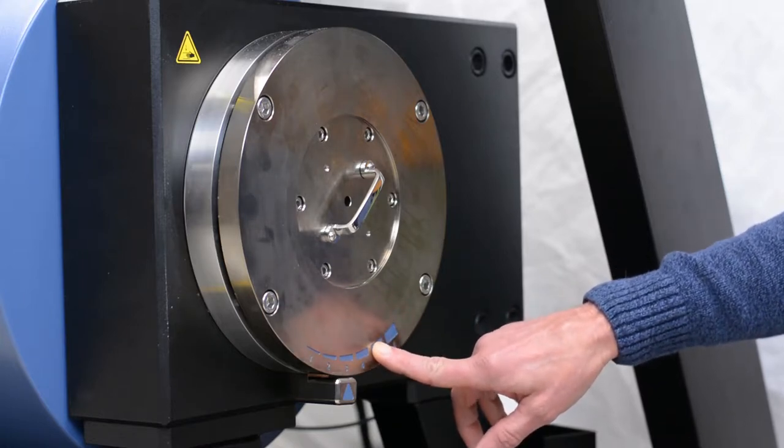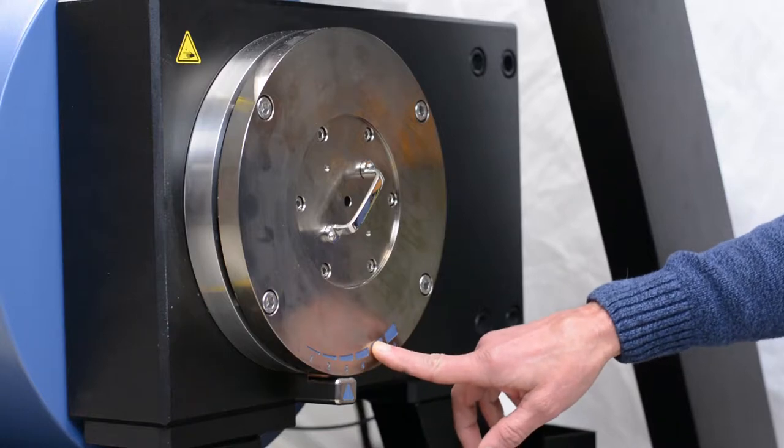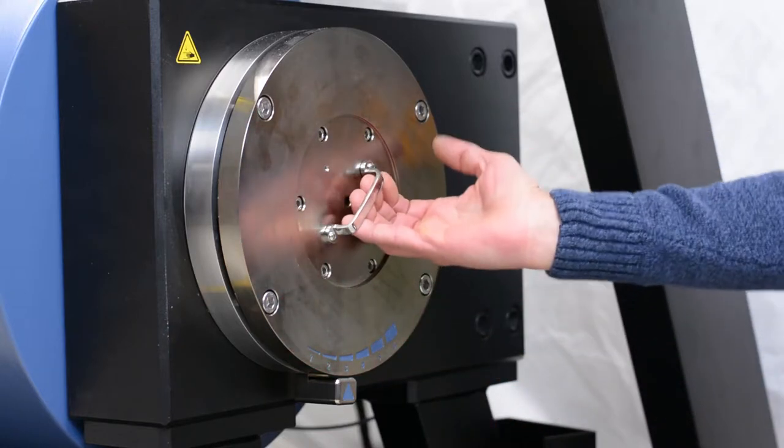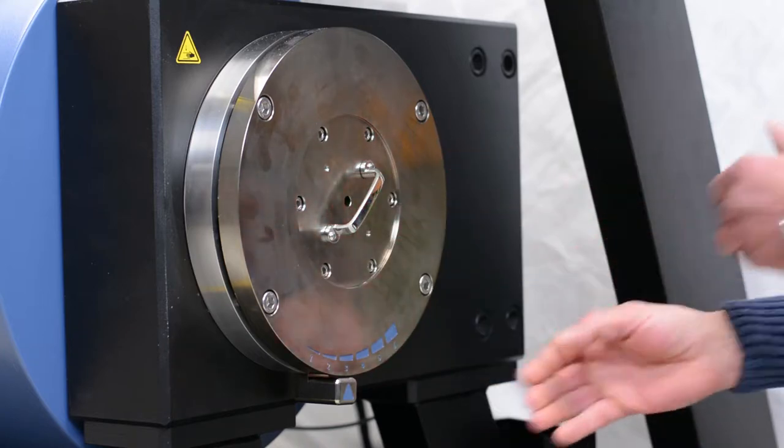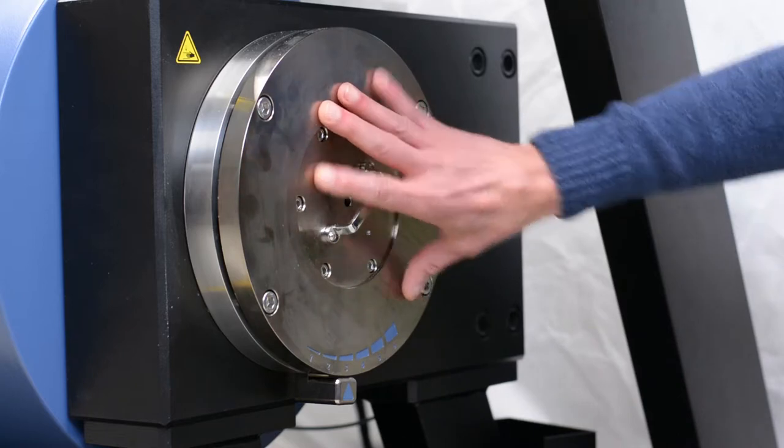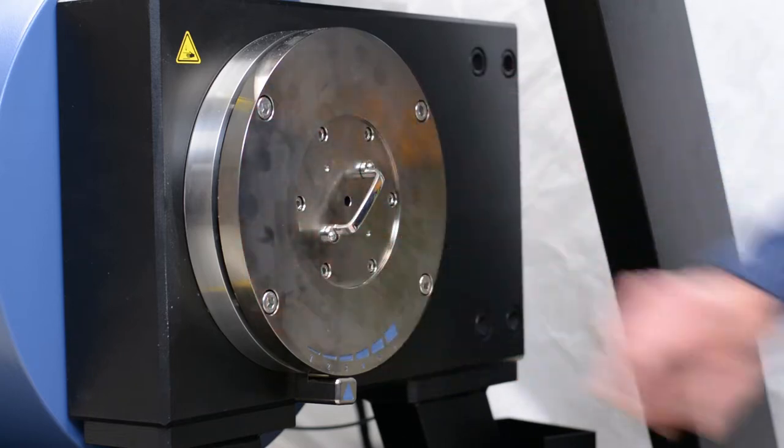Changing from one gap to another is very simple. You simply unscrew these four bolts and pull this fixture towards you and then switch this to another gap setting. Push this back in place, screw the four bolts back in and you're ready to go.